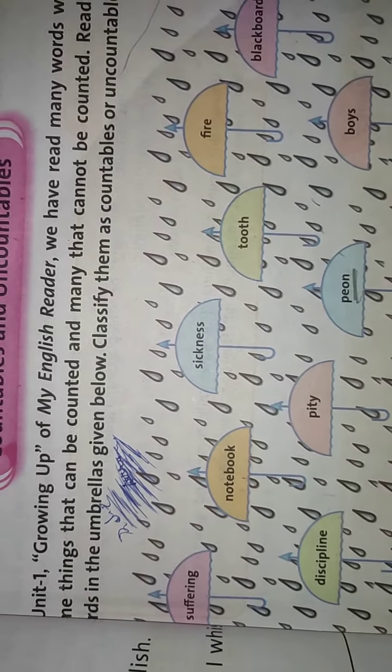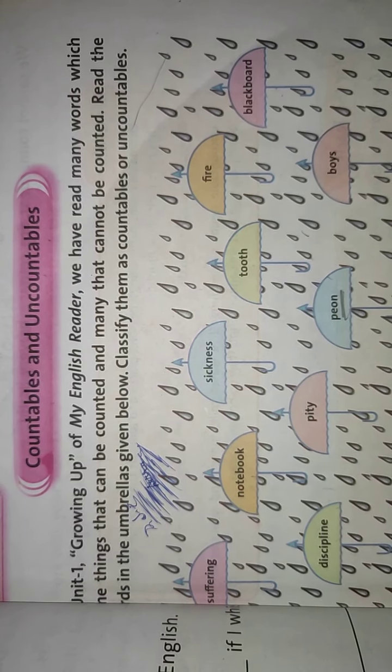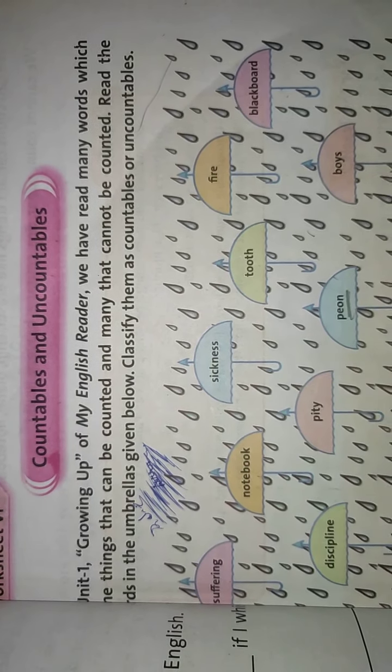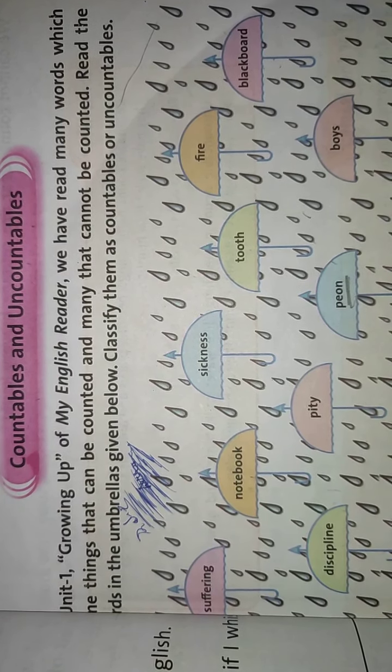Today, the first unit of noun — abstract noun — is completed. Your homework is on page number 9 and page number 7. You have to write in your practice notebook. Learn all of unit 1, abstract noun, and complete your English practice book, unit 1. Thank you.